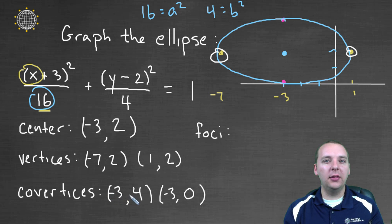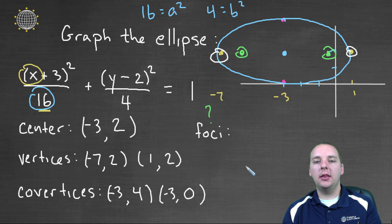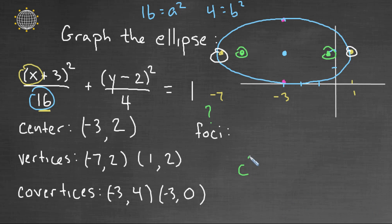Now the only thing really unclear left is: what about the foci? I know where the foci are—the foci are roughly somewhere around here and here, but we don't exactly know where they are. But remember there was a formula for the foci. For the foci, it was c units from the center, dictated by the equation c² = a² - b².